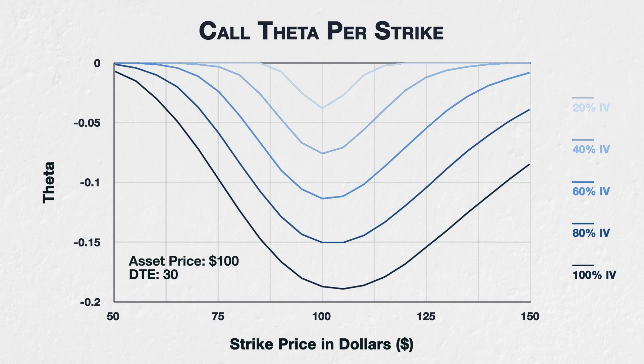As you can see, as implied volatility increases, the theta of all call options increases. The basic characteristic of the most theta being concentrated around at-the-money strikes, and then decreasing in both directions, still holds as IV increases.